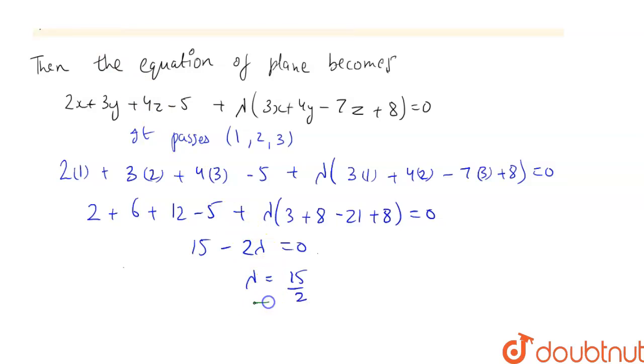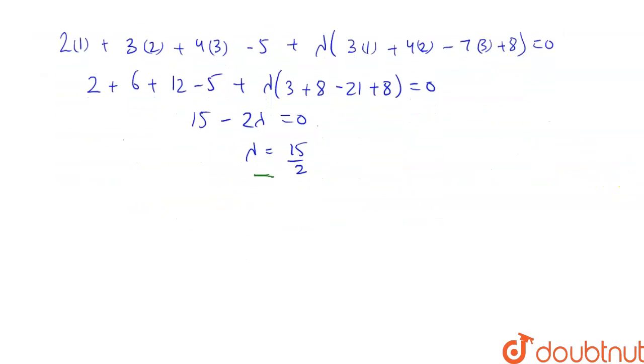Now we will put the value of lambda in this equation to find the equation of plane. So the equation of plane becomes 2x plus 3y plus 4z minus 5 plus lambda was 15 by 2.